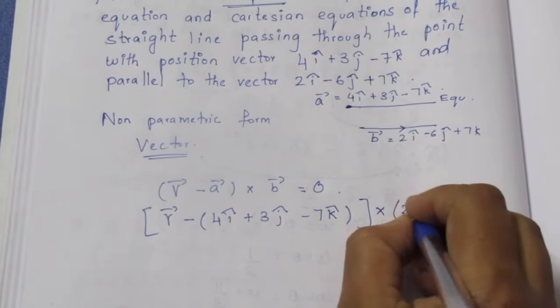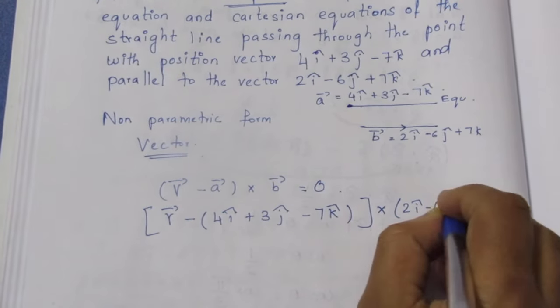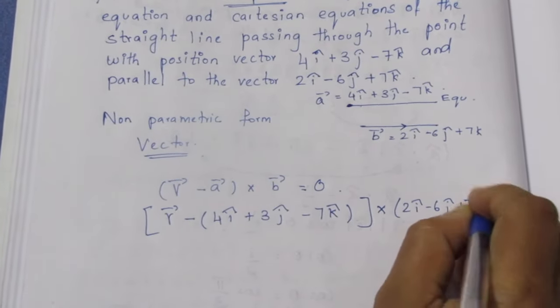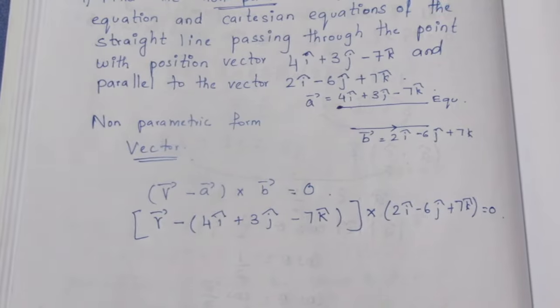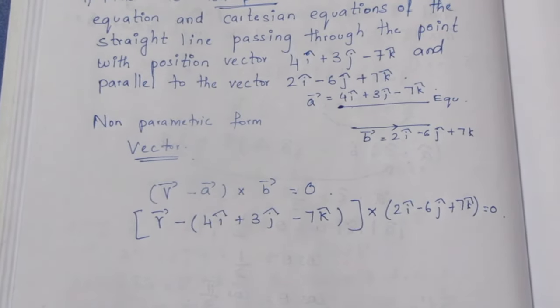cross b vector, 2i cap minus 6j cap, plus 7k cap, equal to 0. This is vector equation.